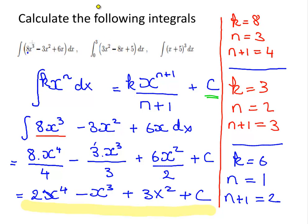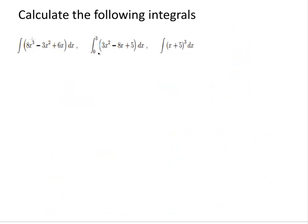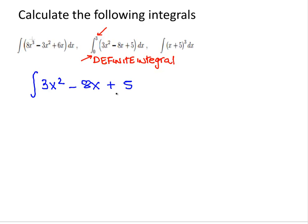The next thing we are going to do is the second one. What we have here is a definite integral. It's very similar to the last one, except we have limits: 0 and 3. That means we evaluate the integral at both 0 and 3 and find the difference. The integrand is 3x squared minus 8x plus 5. We already found that the integral of 3x squared is x cubed.